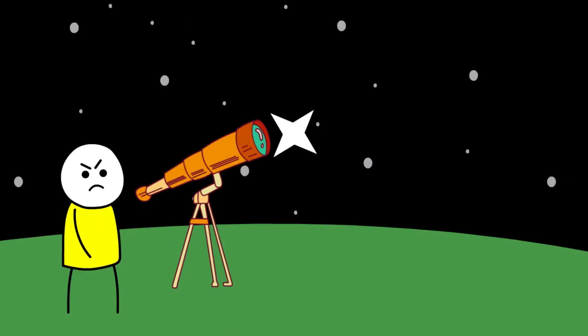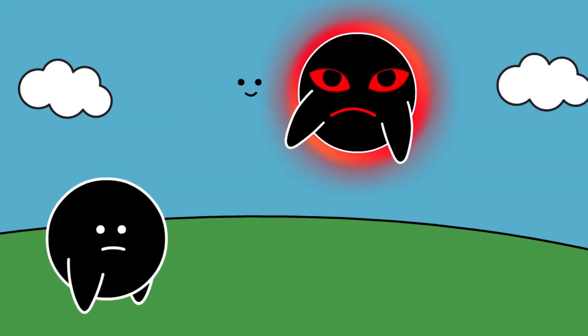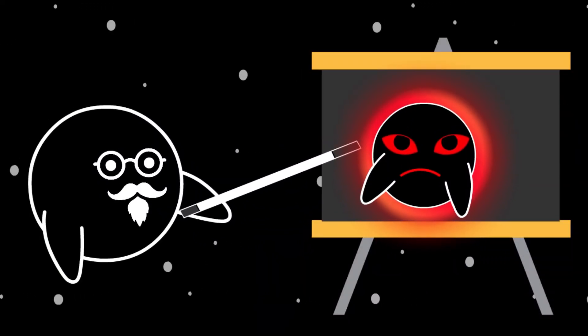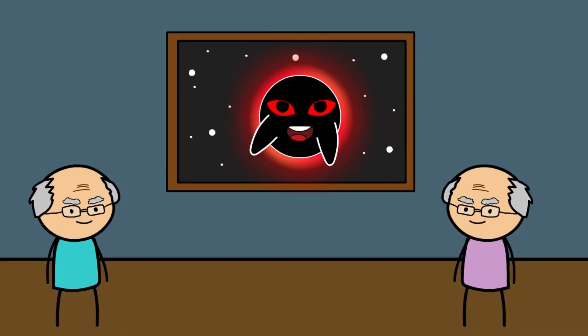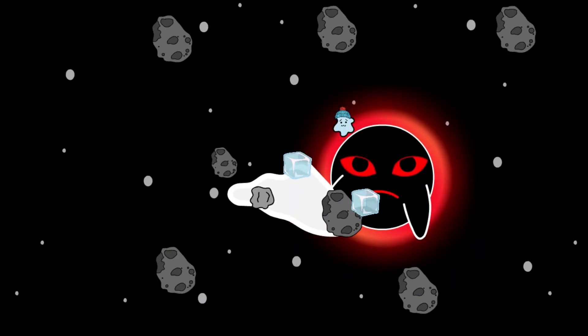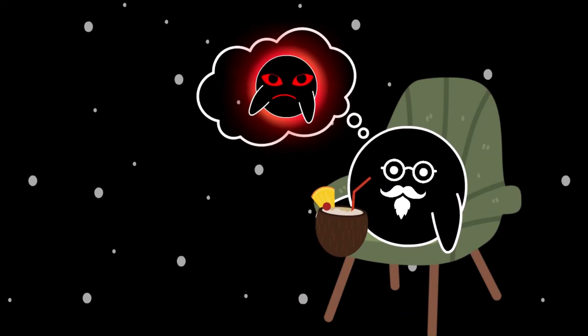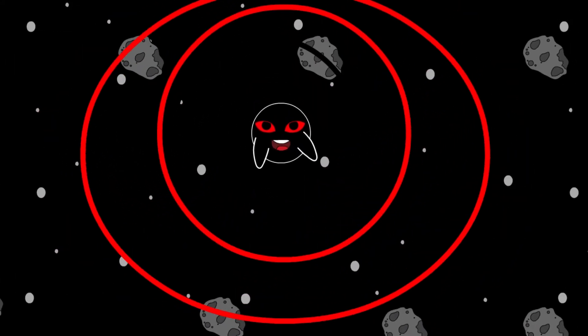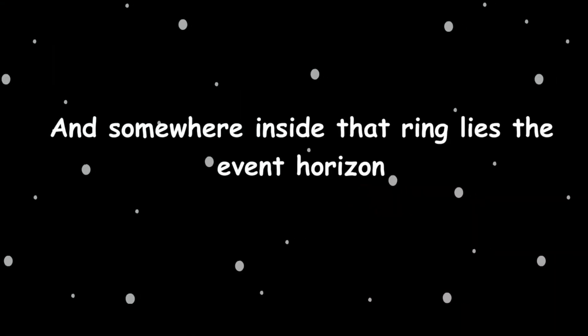And when we finally do see it, it wouldn't look like a star or a planet. It would look like a wound in the sky—a perfectly black circle surrounded by a glowing halo of light, the accretion disk, made from gas, dust, and whatever unfortunate object got too close.